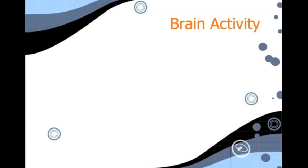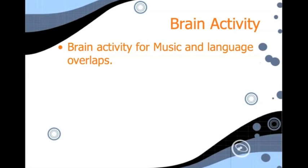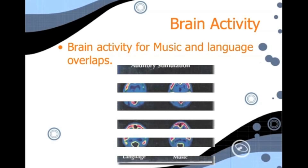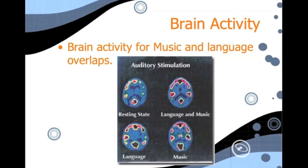The connection between music and language starts in the brain. Scans of brain activity show that although music and language activate different areas of the brain, there is a lot of overlap. Notice the similarities between the patterns of activity as seen in the language state and the music state.